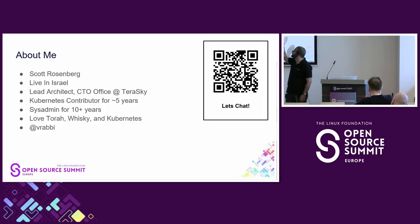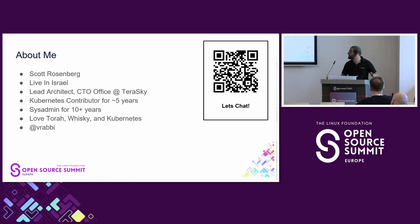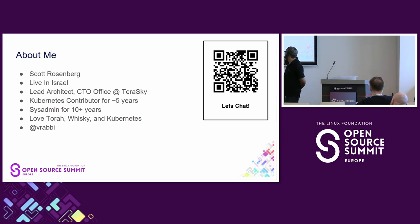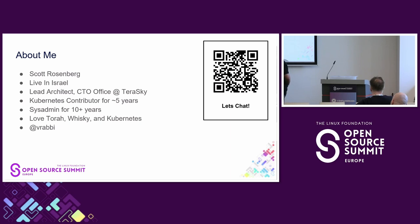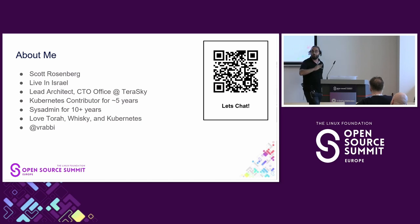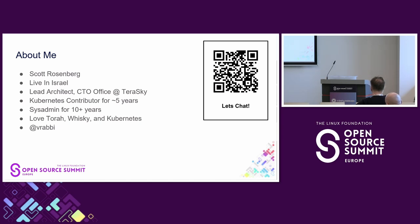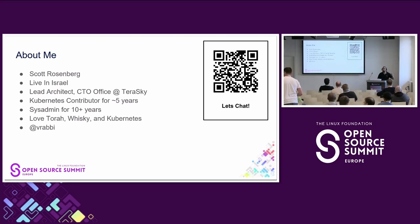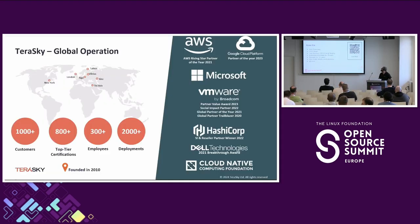A bit about myself. My name is Scott Rosenberg. I live in Israel. I'm the lead architect in the CTO office at TerraSky, a global solutions integrator, working mostly in the Kubernetes and platform engineering spaces. I've been a Kubernetes contributor for around five years — next week it will be five years — and a sysadmin for 10-plus years. My passions in life are Torah, whiskey, and Kubernetes, exactly in that order.